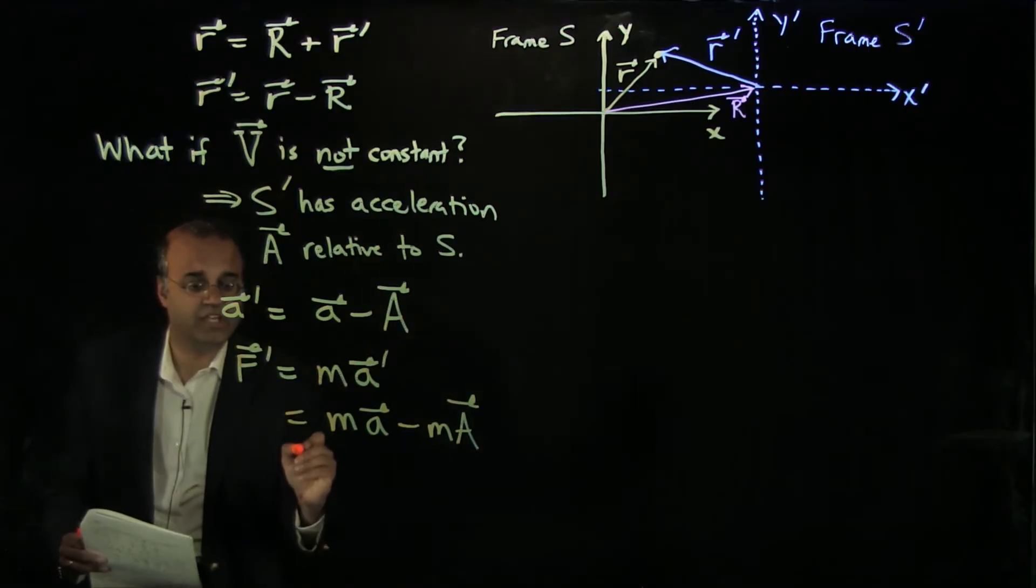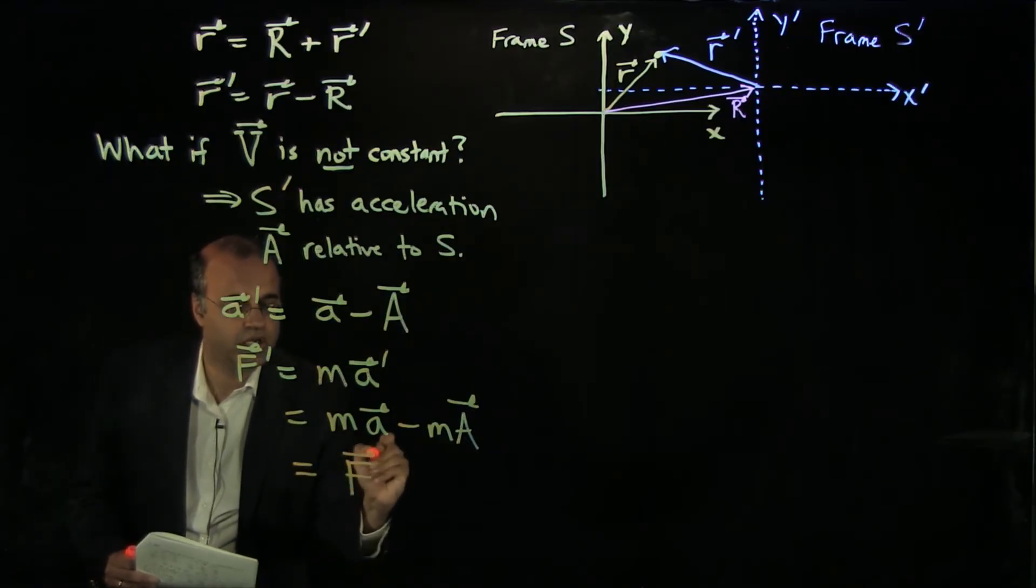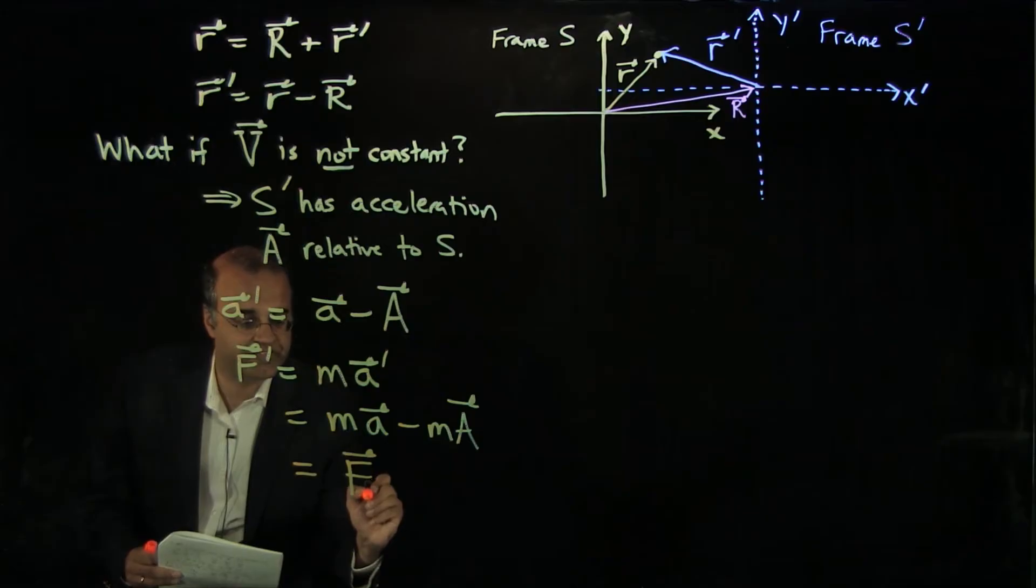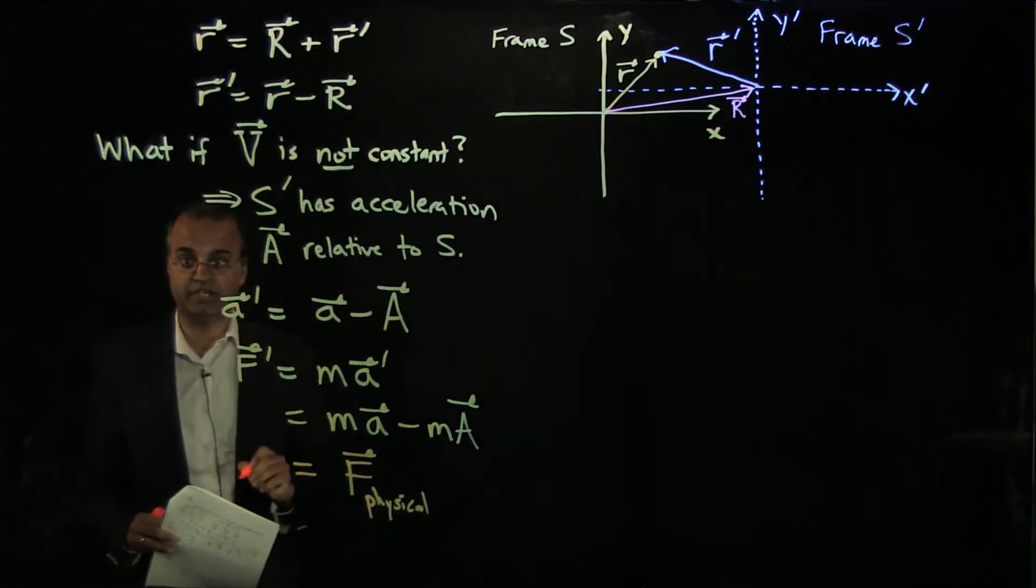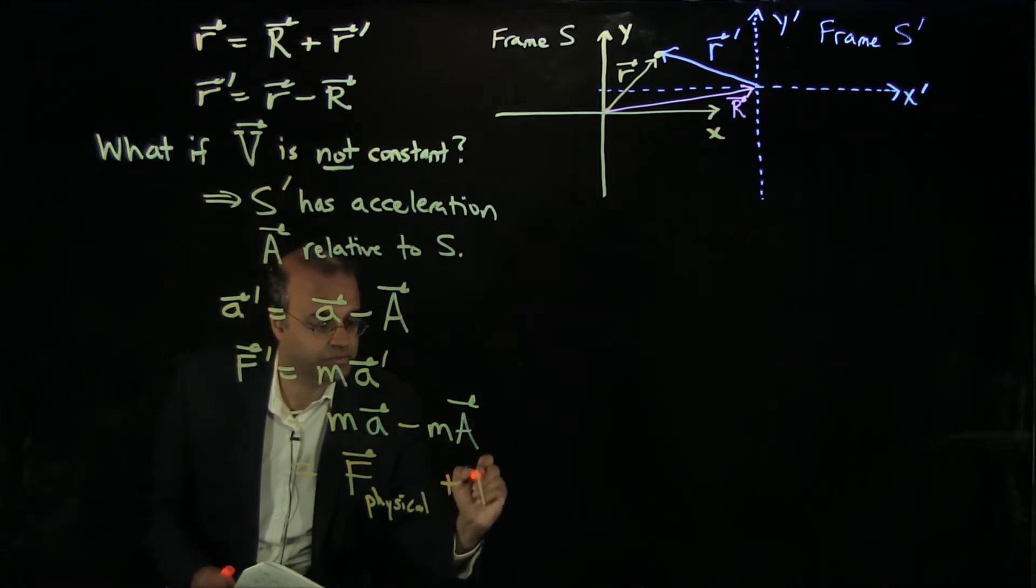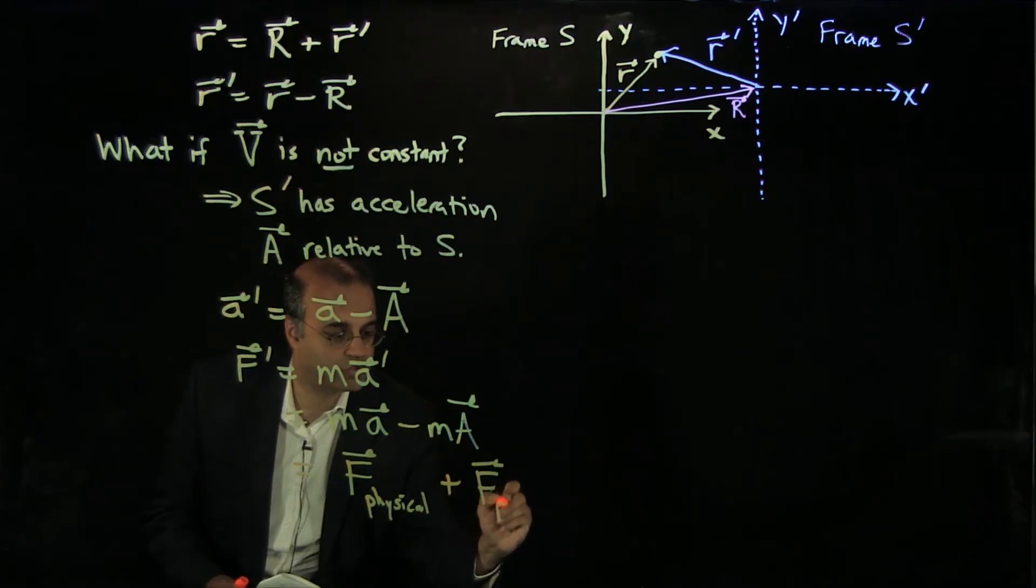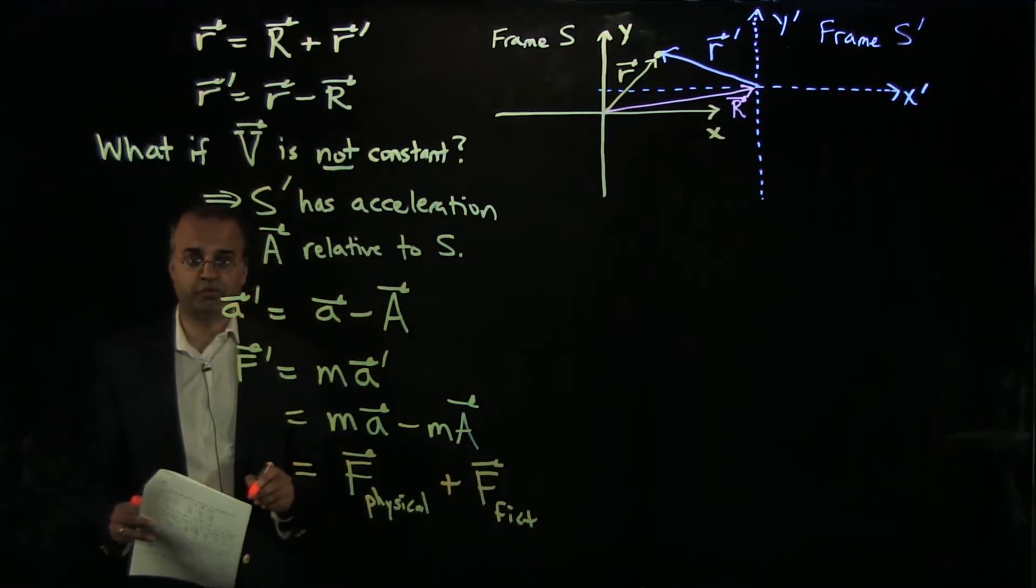Now I can rewrite this as two terms. One I'll call F physical, which represents the physical forces acting on the object. And the second term I'm going to call F fictitious, for reasons that we'll see in a moment.